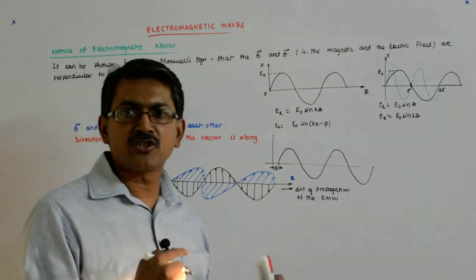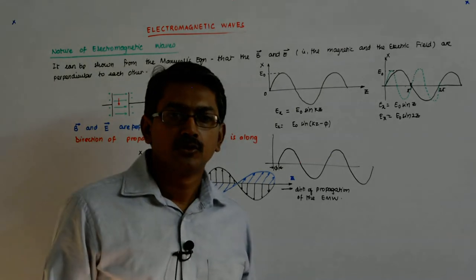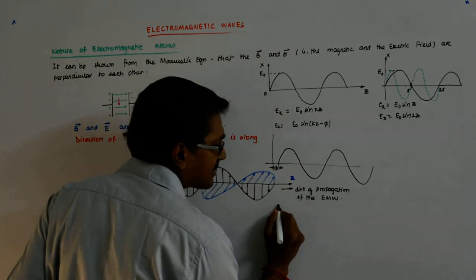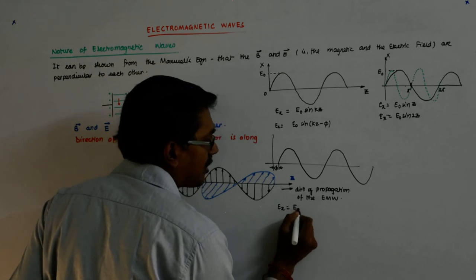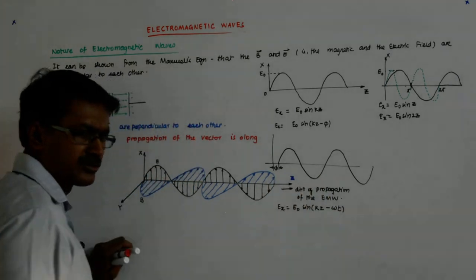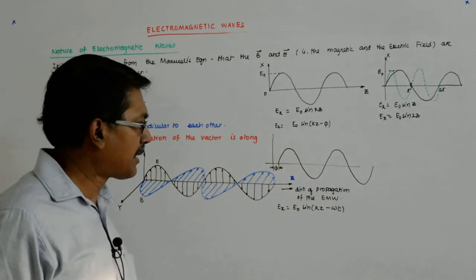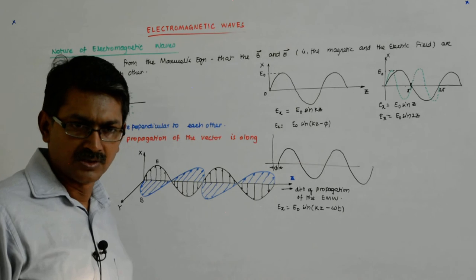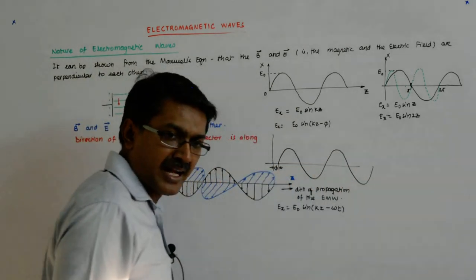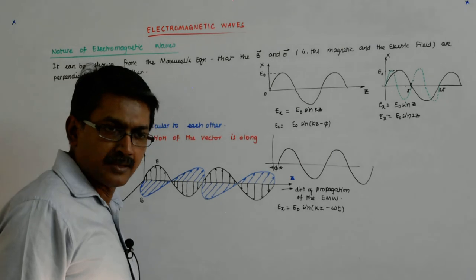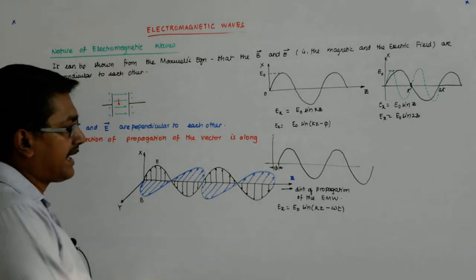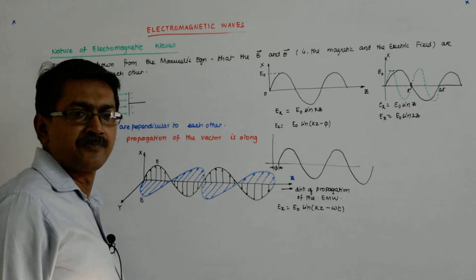I want the wave to be shifting to the right with time. So what happens if I write E_x equal to E naught sine(kz − ωt)? This term controls the frequency. As time increases, ωt increases and the wave starts shifting to the right. From a stationary wave E naught sine(kz), I have achieved a time-varying traveling wave.